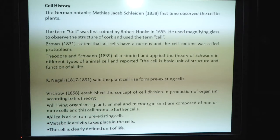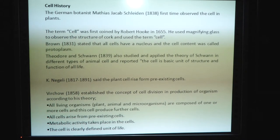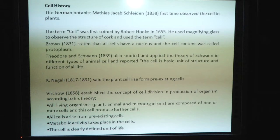History of cell. The German botanist Matthias Jacob Schleiden, 1838, first time observed the cell in plants. The term cell was first coined by Robert Hooke in 1655. He used a magnified glass to observe the structure of cork and used the term cell. R. Brown, 1831, stated that all cells have a nucleus and the cell content was called protoplasm. Theodore Schwann, 1839, studied and applied the theory in different types of animal cells and reported that the cell is a basic unit of structure and function of life.